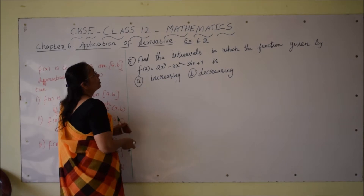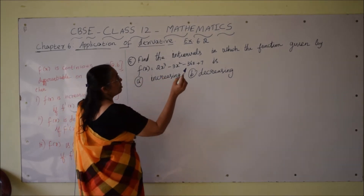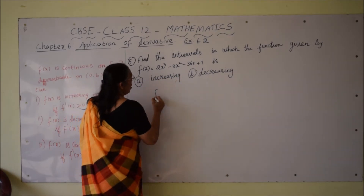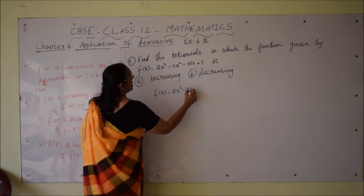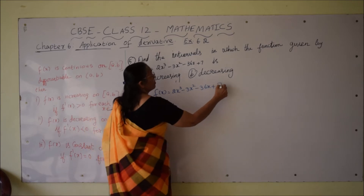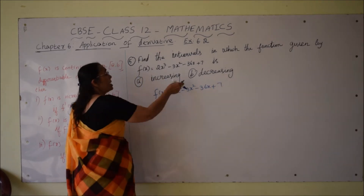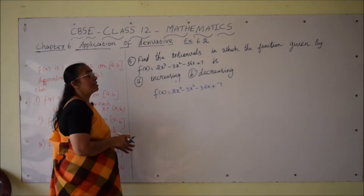Question number 5: find the intervals in which the function f(x) = 2x³ - 3x² - 36x + 7 is increasing, and second, where it is decreasing.